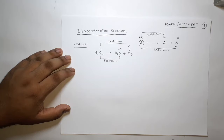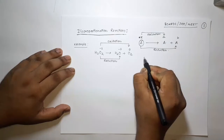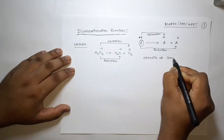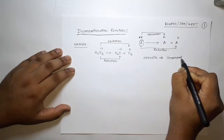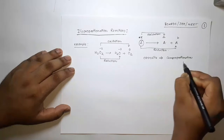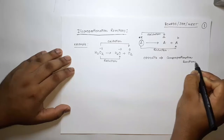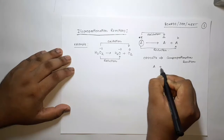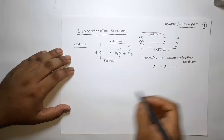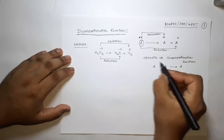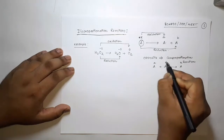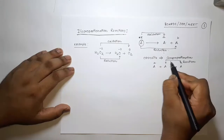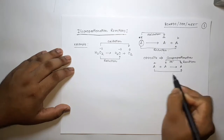The opposite of the disproportionation reaction is called the comproportionation reaction. In a comproportionation reaction, from two different oxidation states you end up with one intermediate oxidation state. For example, from oxidation states 'a' and 'b' you get intermediate x — so going from b to x is oxidation, and going from a to x is reduction.